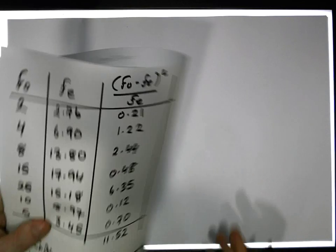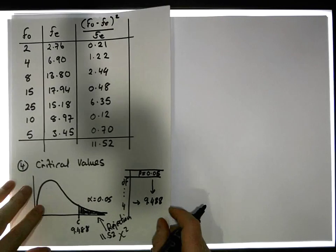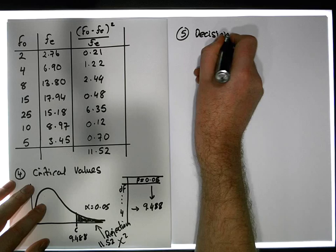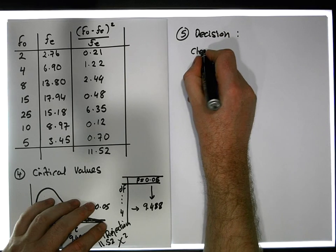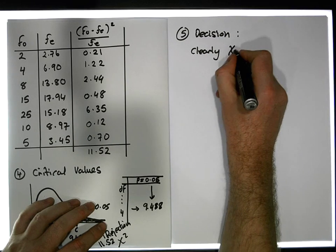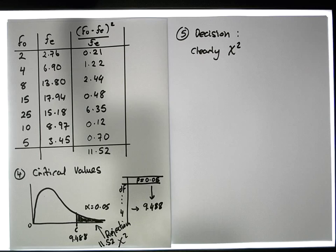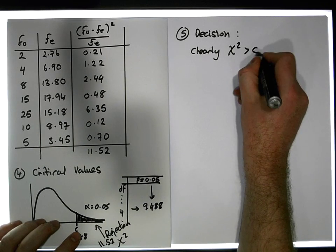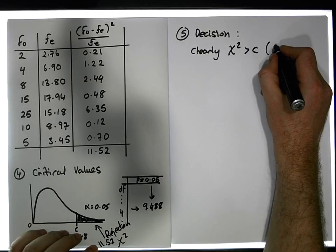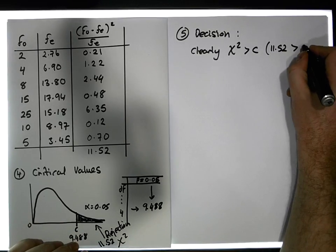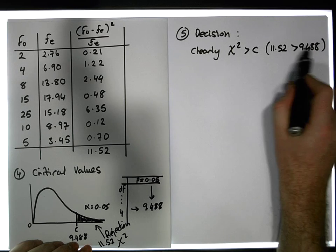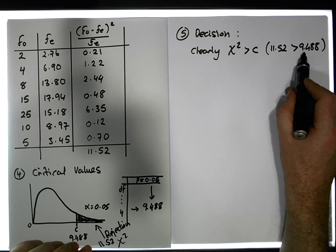Step five in our test is our decision. Clearly, our chi-squared test statistic, which is the magnitude of the difference between the observations and the expectation, is bigger than our critical value. 11.52 is bigger than 9.488—in other words, I'm in the rejection region, I'm out further in the right-hand tail than what I need to be.